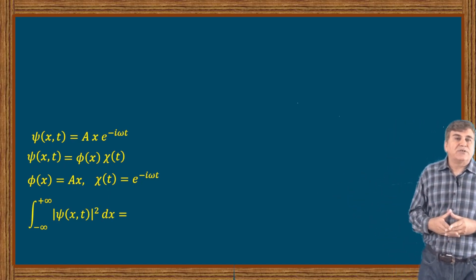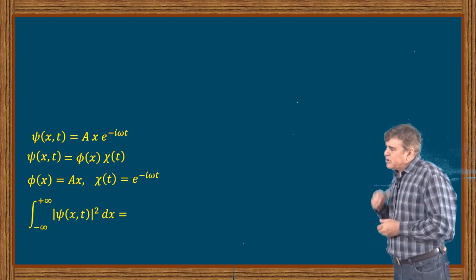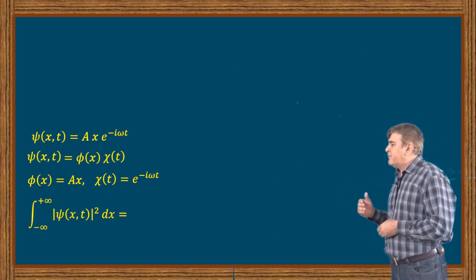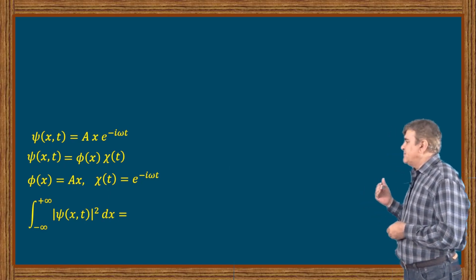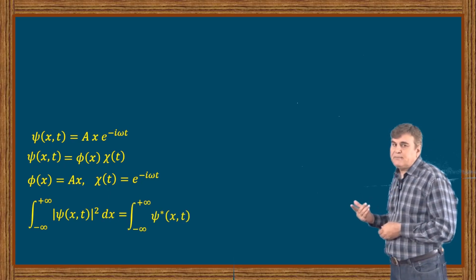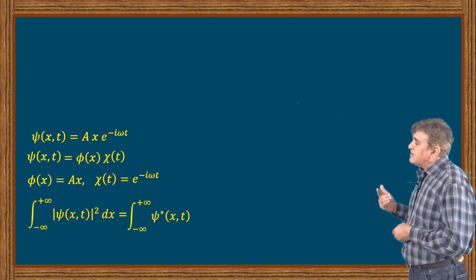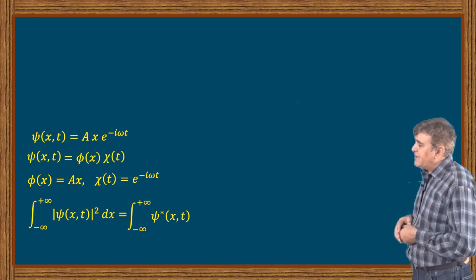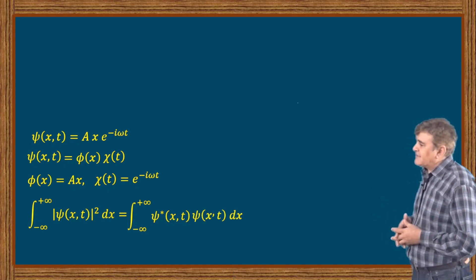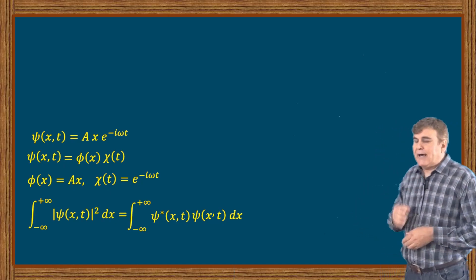Putting the values, I can write the right side of this as the integral from minus infinity to plus infinity of ψ*(x,t) times ψ(x,t) integrated over the space dx. And if I substitute the values...